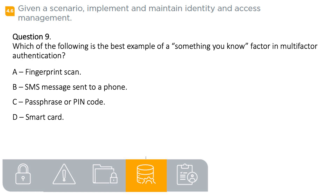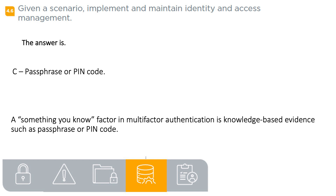Question 9. Which of the following is the best example of a 'something you know' factor in multi-factor authentication? A. Fingerprint scan. B. SMS message sent to a phone. C. Passphrase or pin code. D. Smartcard. The answer is C: passphrase or pin code. A 'something you know' factor in multi-factor authentication is knowledge-based evidence such as a passphrase or pin code.